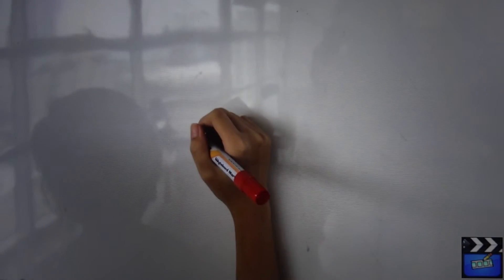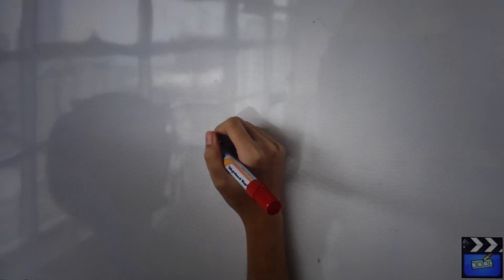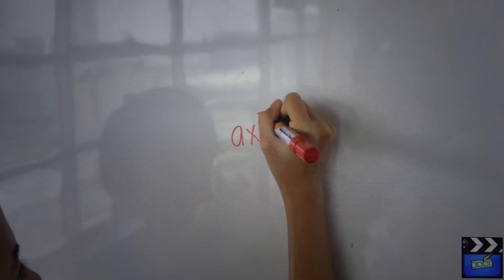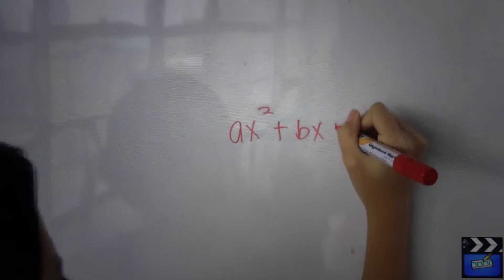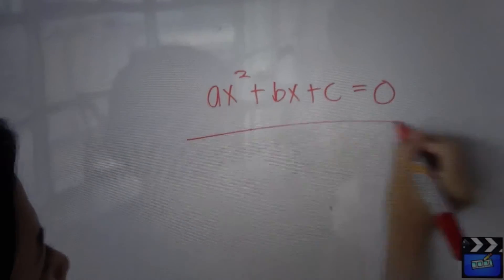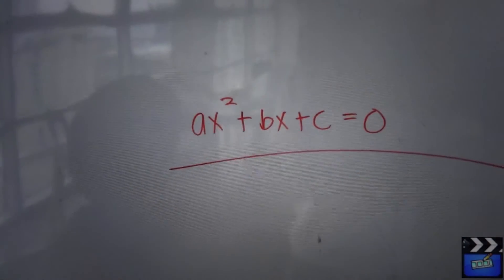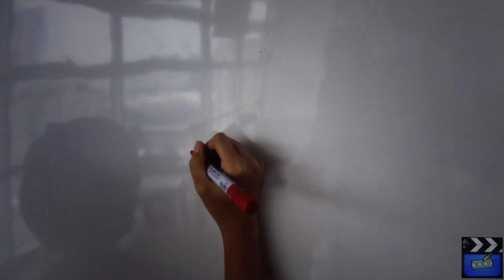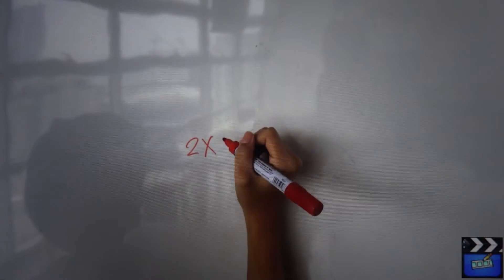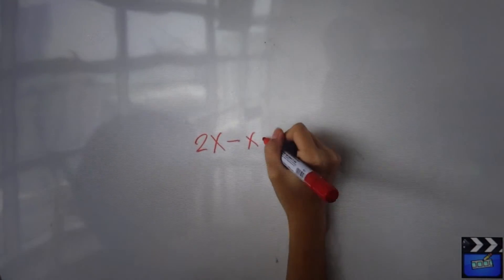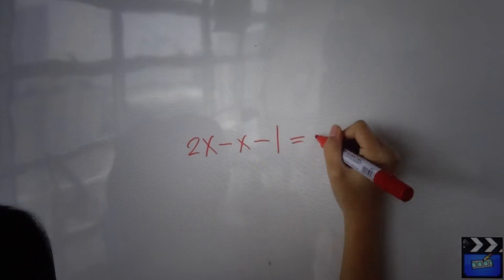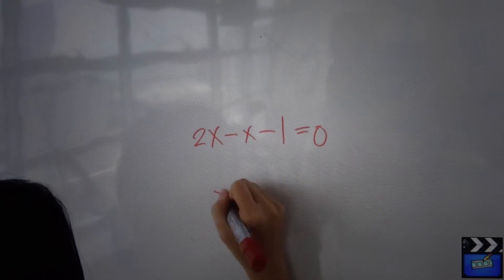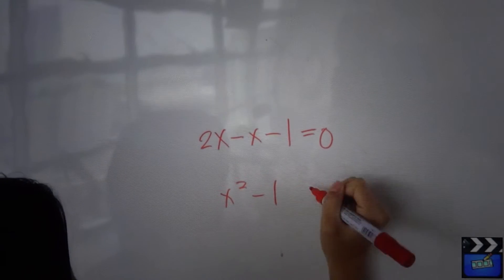A quadratic equation is an equation of the form ax squared plus bx plus c equals zero. It involves only two things besides numbers: a variable and the square of that variable. Examples include 2x squared minus x minus 1 equals zero, and x squared minus 1 equals zero.